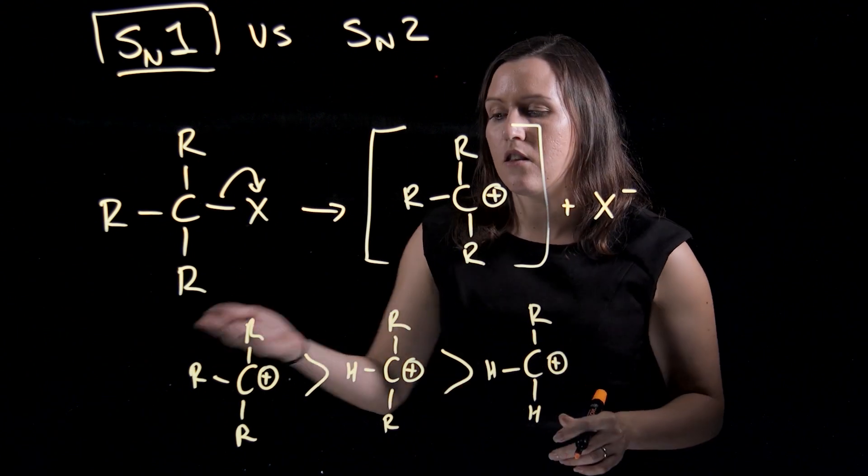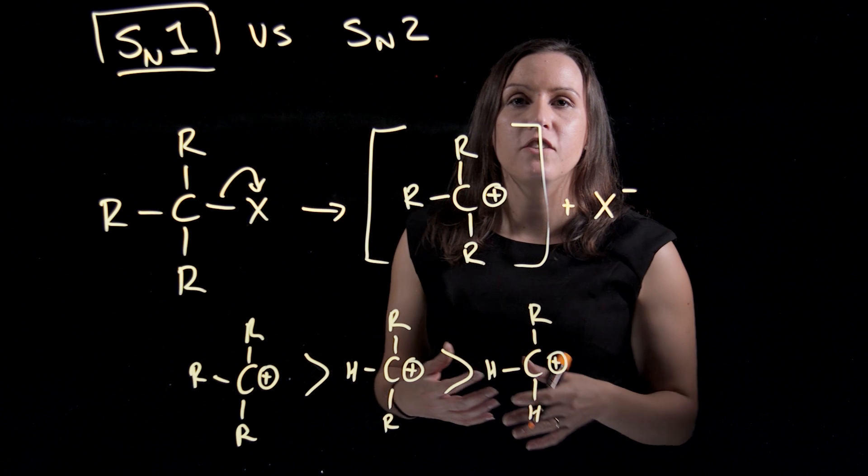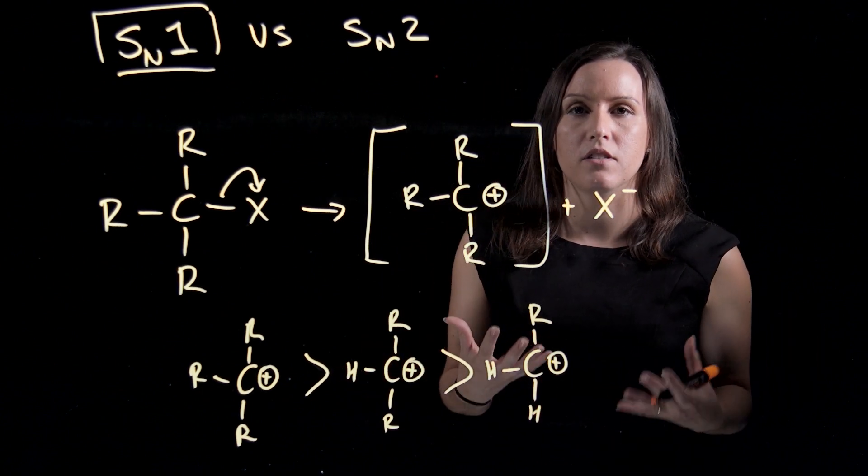So the reason that the tertiary is the most stable is because the carbons are a lot bigger than hydrogens. So they have extra orbitals available to help stabilize that positive charge.